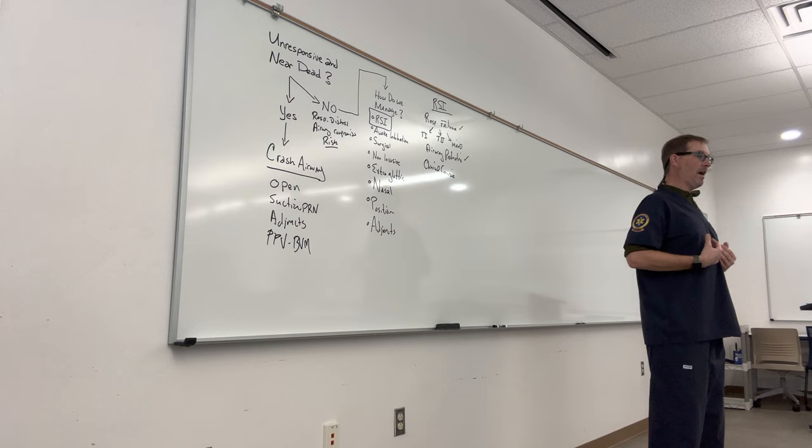Compartment one contains gastric intubation supplies — a Toomey syringe and gastric tubes. Compartment two contains BVM, PEEP valve, your supraglottic option — in this case an i-gel — and a carbon dioxide detector. Compartment three contains oral airways, nasal airway, 10-milliliter syringe, suction, lubrication, and gauze pads. You want these patients on the monitor with at least Q5 blood pressure checks, four bags of fluid, nasal cannula, and a non-rebreather mask.